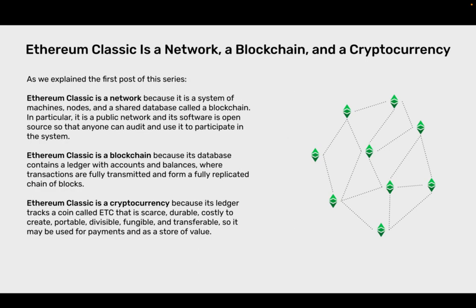Ethereum Classic is a network, a blockchain and a cryptocurrency. Ethereum Classic is a network because it is a system of machines, nodes and the shared database called a blockchain. In particular, it is a public network and its software is open source so that anyone can audit and use it to participate in the system. The software is CoreGeth. Ethereum Classic is a blockchain because its database contains a ledger with accounts and balances where transactions are fully transmitted and form a fully replicated chain of blocks. Ethereum Classic is a cryptocurrency because its ledger tracks a coin called ETC that is scarce, durable, costly to create, portable, divisible, fungible and transferable, so it may be used for payments and as a store of value.